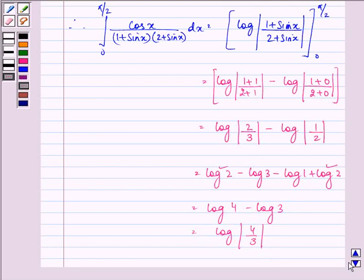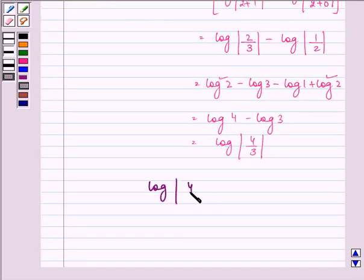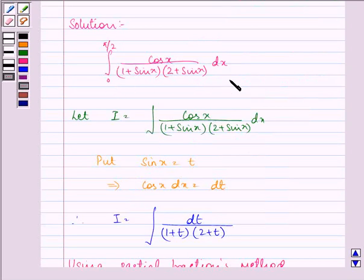The answer to the question is log mod 4 upon 3 is the value of the given definite integral. Hope you understood the procedure well and do take care of all your steps. Have a nice day ahead.